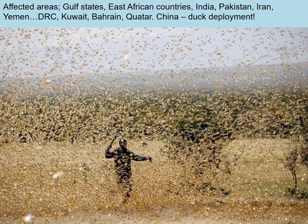This image shows what it's like when locusts swarm — taken in farmland in Kenya, where a swarm moves in and within an hour can destroy an entire crop before moving on. The normally affected areas include the Gulf States, East African countries, India, Pakistan, Iran, and Yemen. Recently, because of rising temperatures, other areas not normally affected — including the Democratic Republic of Congo, Kuwait, Bahrain, and Qatar — are also being affected.